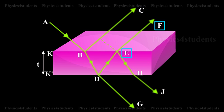BC and EF are reflected rays parallel to each other and DG and HJ are transmitted rays parallel to each other.